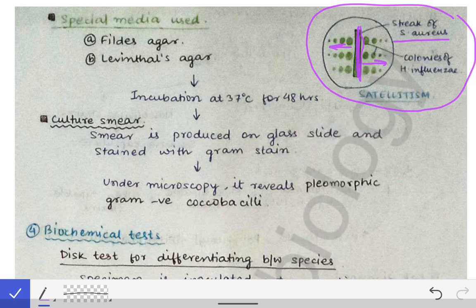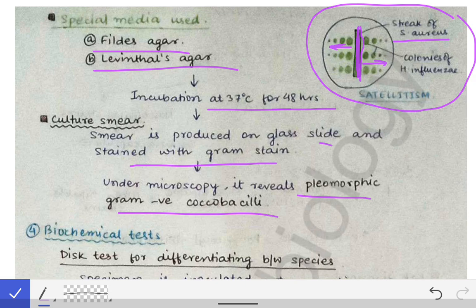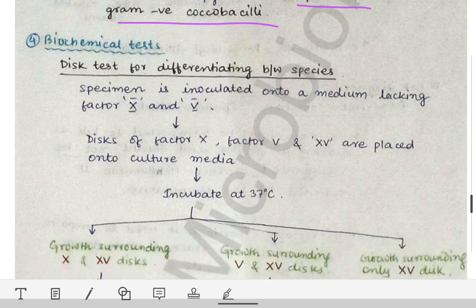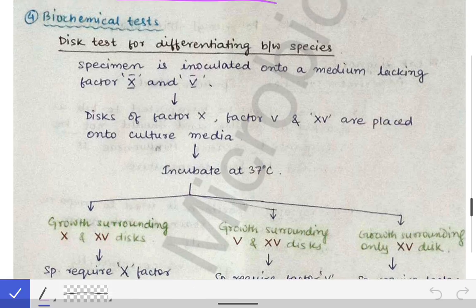The special media used for Haemophilus influenzae include Fildes agar and Levinthal's agar. These are incubated at 37 degrees centigrade for 48 hours. When a culture smear is prepared on a glass slide and stained with Gram stain and examined under the microscope, it reveals pleomorphic gram-negative coccobacilli.